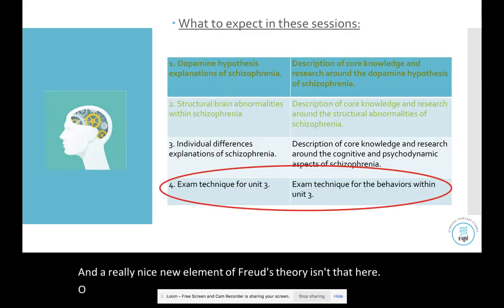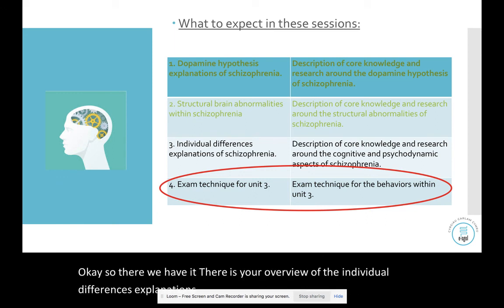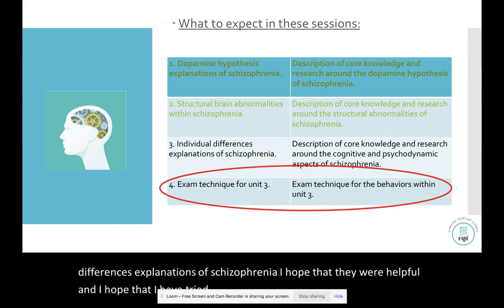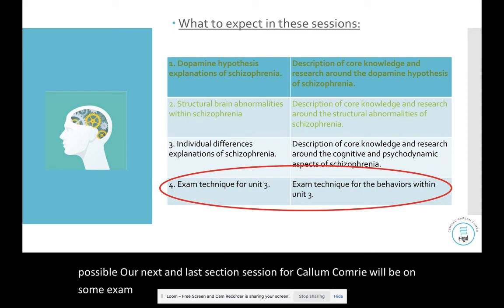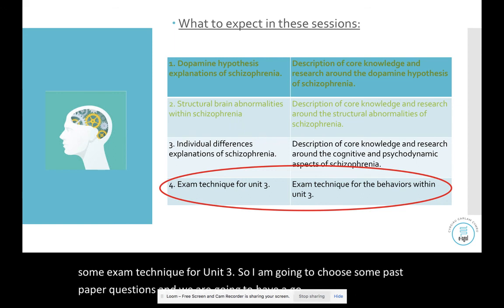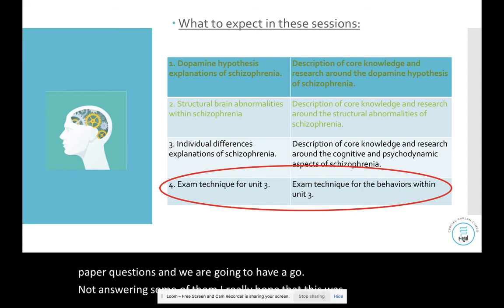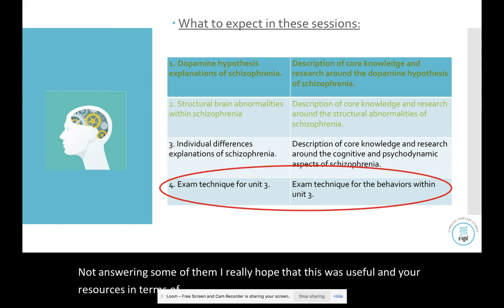So there we have it — an overview of the individual differences explanations of schizophrenia. Our next and last session for Carlem Cymru will be on exam technique for unit three, where we'll choose some past paper questions and have a go at answering them. I really hope that this was useful, and the PowerPoint resources will also be available on the website. Thank you.